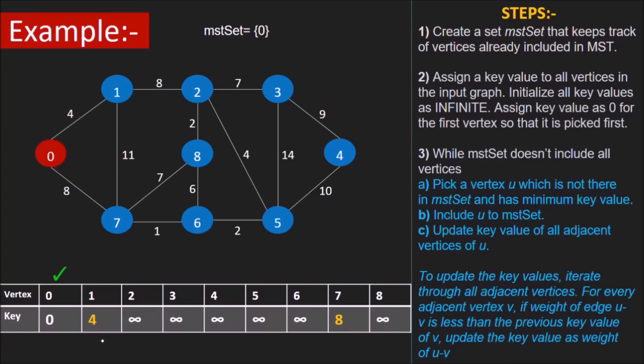Again, pick the vertex with minimum key not in MST set which is v1 in this case with key 4. Add it to the MST set. Here, v2 and v7 are the vertices adjacent to u. Now, we again see that the weight of edge 1,2 which is 8 is less than the current key of v2. So key of v2 will be updated to 8. But on the other hand, weight of edge 1,7 is 11 whereas the key of v7 is already 8. So the key of v7 won't be updated.